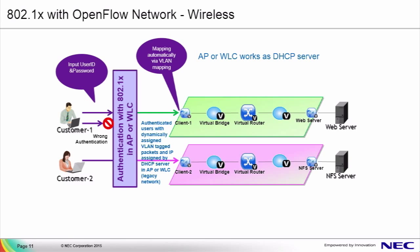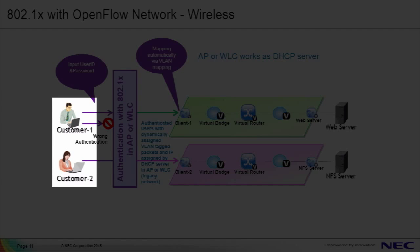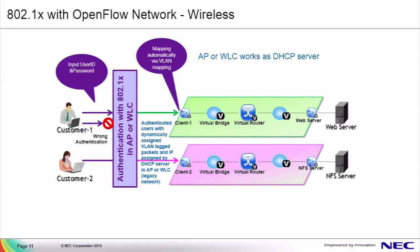To illustrate how the VLAN mapping technique may be used to isolate different users into different virtual networks, we're showing customer 1 being mapped to the green VTN and customer 2 being mapped to the pink VTN. When customer 1 is authenticated via RADIUS, the RADIUS server allocates a VLAN ID of 14, allowing the wireless LAN controller to forward all of customer 1's traffic into VLAN ID 14 through the traditional networking switch and to the OpenFlow network. When the ProgrammableFlow slash OpenFlow network receives traffic from VLAN ID 14, it's mapped into the green VTN, allowing customer 1 access to the web server.